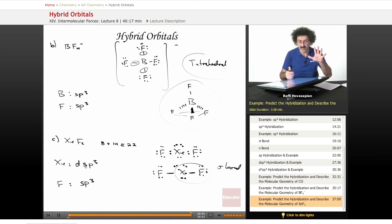If you have five objects, it's dsp3. And if you have six objects, it's d2sp3.